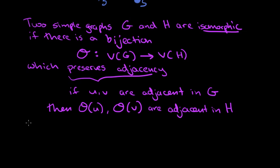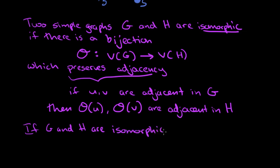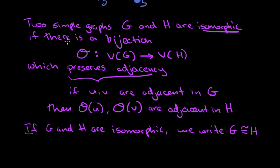The notation we use for isomorphisms is like this: if G and H are isomorphic, we write G, then an equals sign with a little squiggly line on top, and this means G is isomorphic to H. It's equivalent, by the way — if G is isomorphic to H, then H is isomorphic to G. So I want to discuss the idea of an isomorphism by looking at our example and actually giving this map, which will be a bijection.